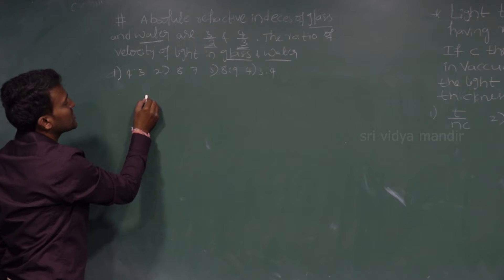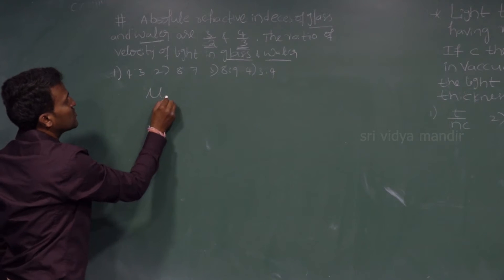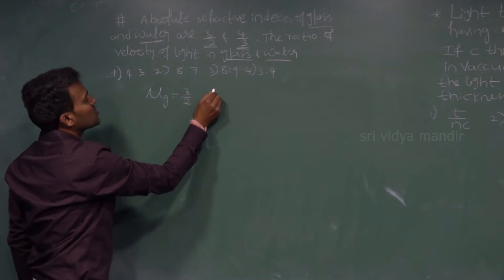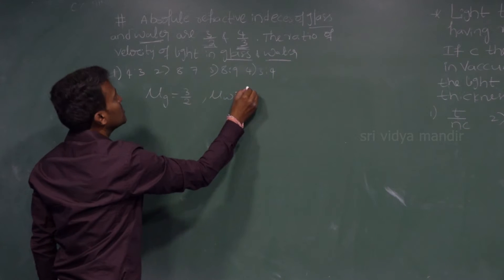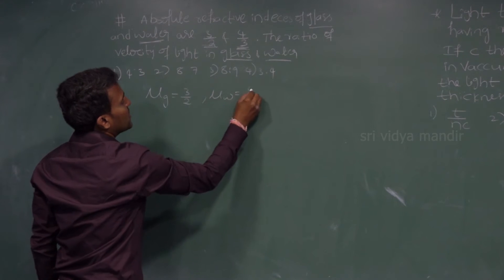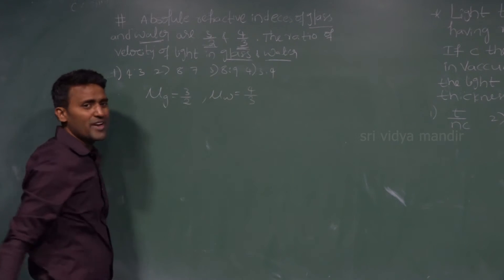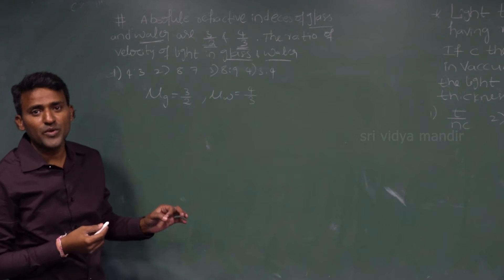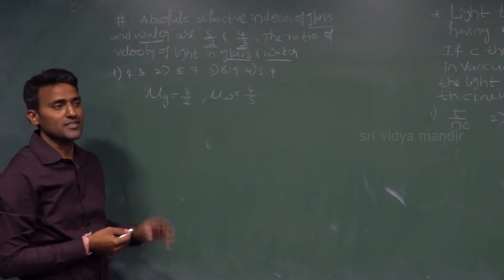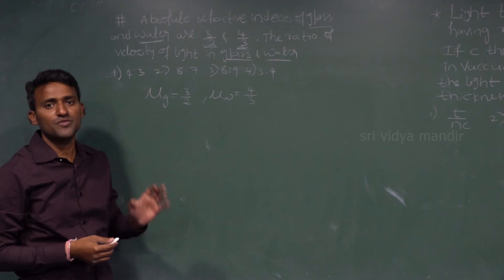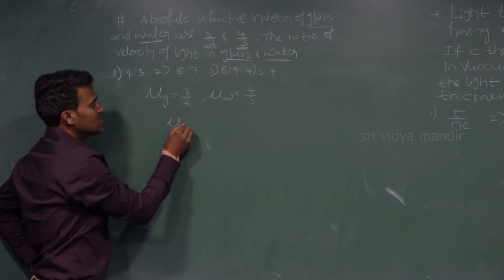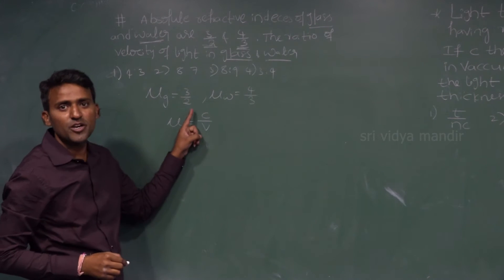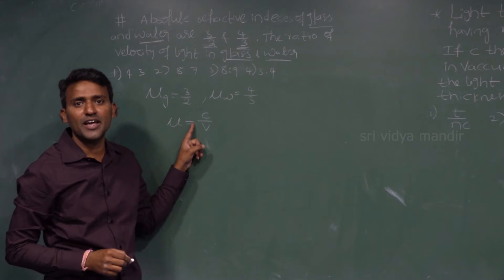First, let's write the given data: refractive index of glass is 3/2 and refractive index of water is 4/3. The relation between refractive index and speed of light is: refractive index equals C divided by V — the ratio of speed of light in vacuum to speed of light in the medium.